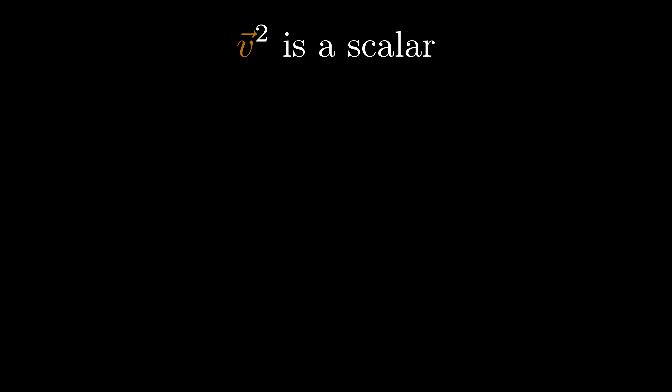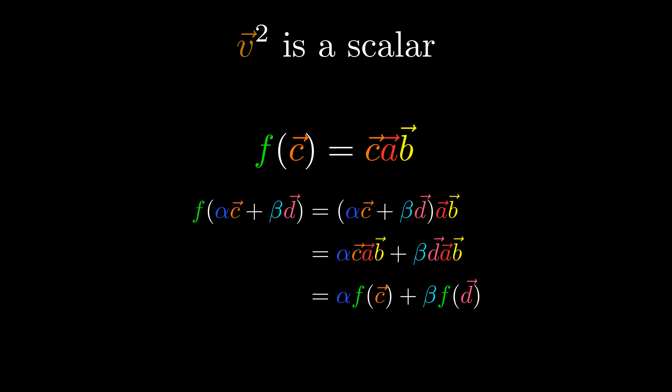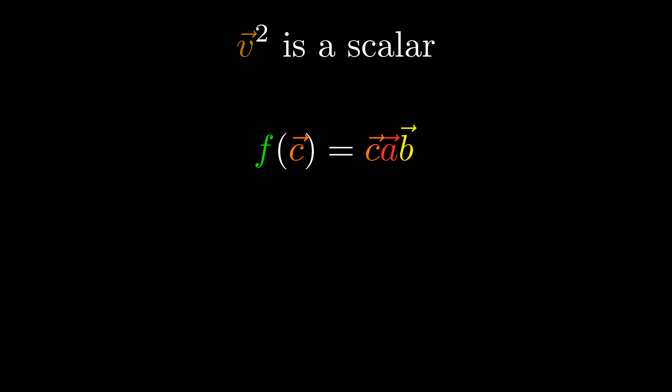So let's go back to trying to understand the geometric product in a way that can be generalized to other flavors. The one thing we know is that in all flavors, a vector squared is a scalar. Now let's think about the product of two vectors A and B. What if we multiply another vector by this product? In two dimensions, the product of three vectors is always another vector, so we have a function that takes in a vector and produces another vector. By the distributivity and associativity of the geometric product, this function is a linear transformation. But what linear transformation is it?